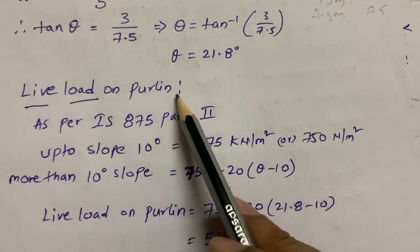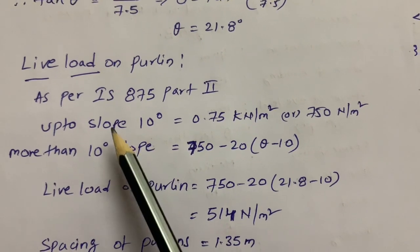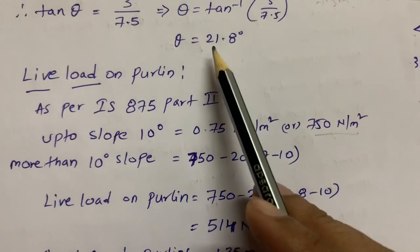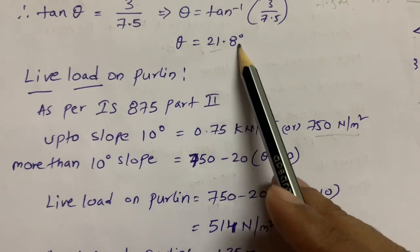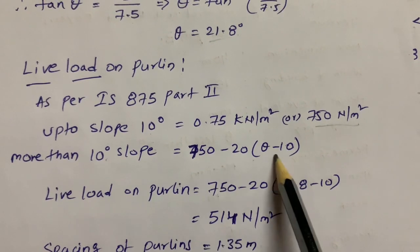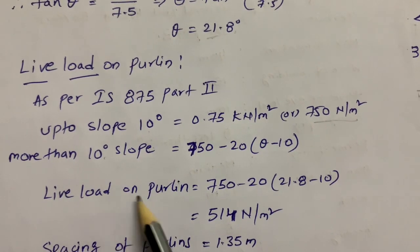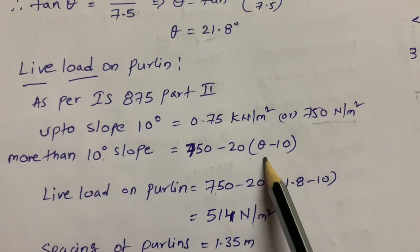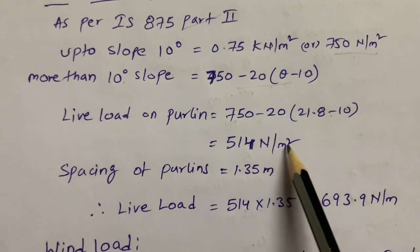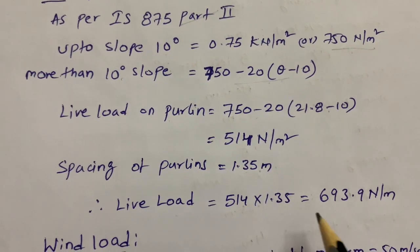As per IS 875 Part 2, for slopes up to 10 degrees we take 750 Newton per meter square. Since our slope is 21.8 degrees — more than 10 degrees — we use the formula: live load = 750 − 20(θ − 10) = 750 − 20(21.8 − 10) = 514 Newton per meter square. With purlin spacing of 1.35 meters, live load = 514 × 1.35 = 694 Newton per meter.